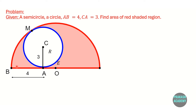I will solve this problem by using some construction and a theorem from circle geometry. First, let us connect point O and point M by drawing line OM. This line will also pass through the centre of the smaller circle, that is point C.